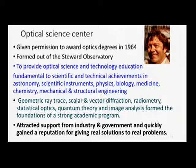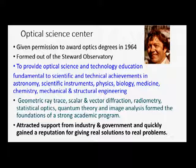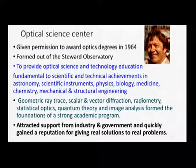The Optical Sciences Center addressed technical achievements in astronomy, scientific instruments, physics, biology, and medicine, using the tools of geometric ray trace, scalar and vector refraction, radiometry, statistical optics, quantum theory, and image analysis — cutting across more disciplines than had ever been tried before. The center attracted support from industry and government quickly and gained a reputation for giving real solutions to real problems. Most of the faculty members Aidan hired had gotten their PhDs, worked a few years in industry, and then came back to teach — those few years in industry gave them perspective on how to get things done to cost, schedule, and performance.